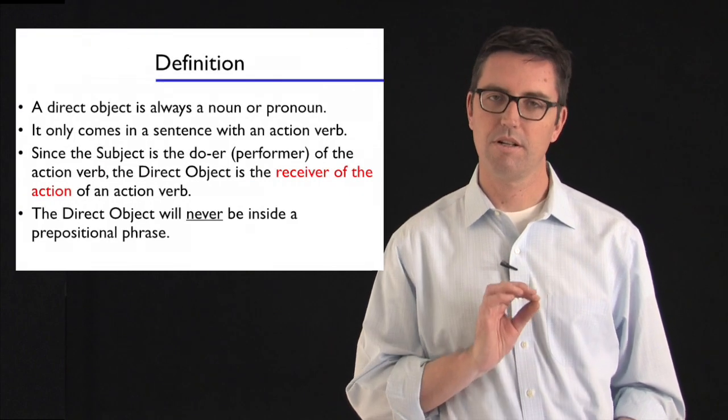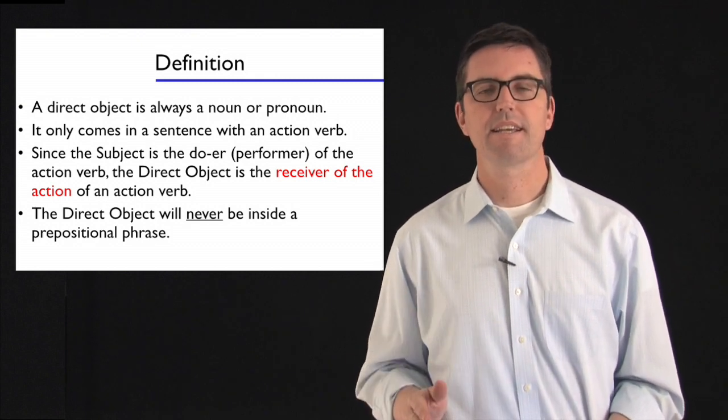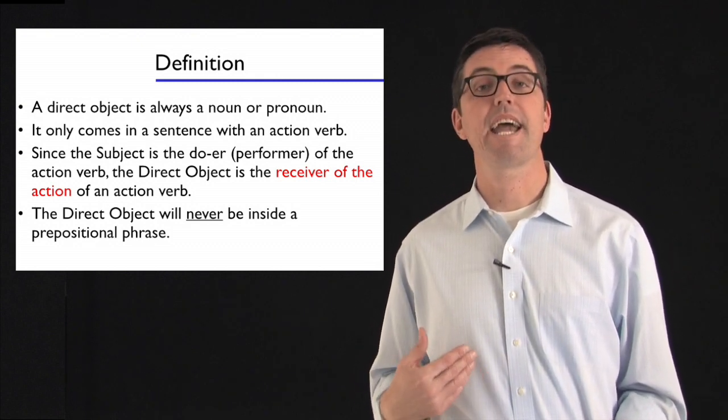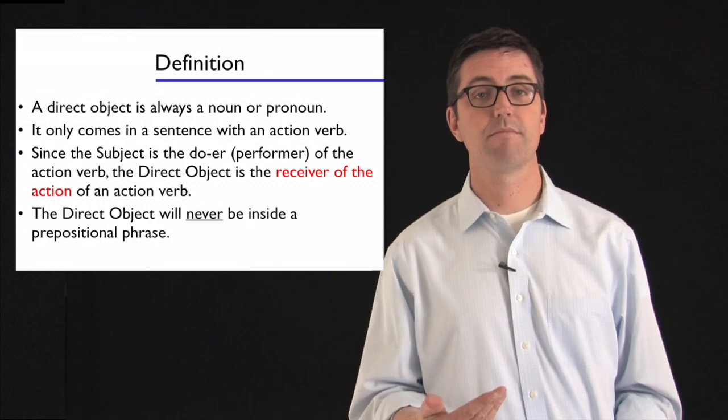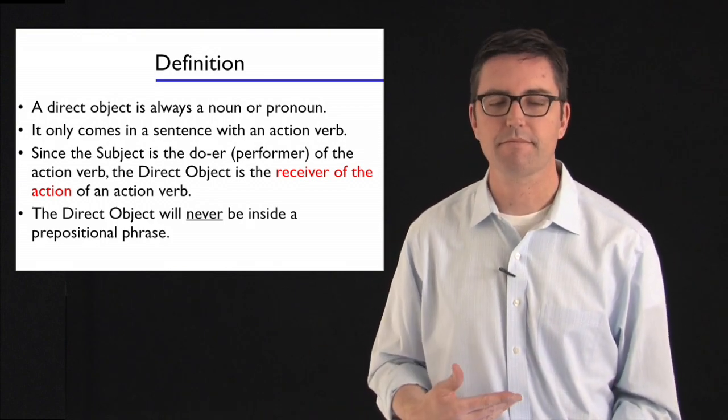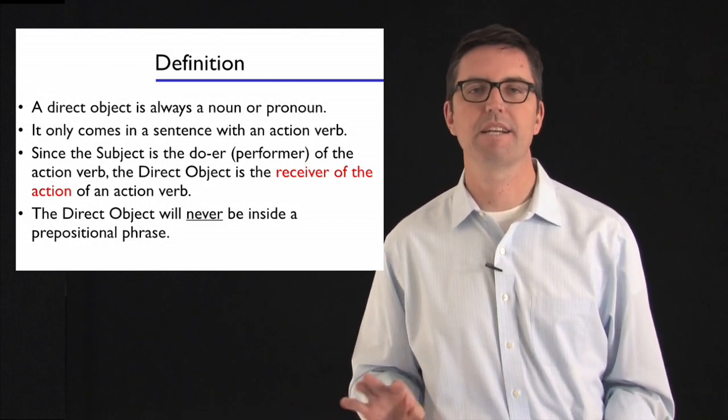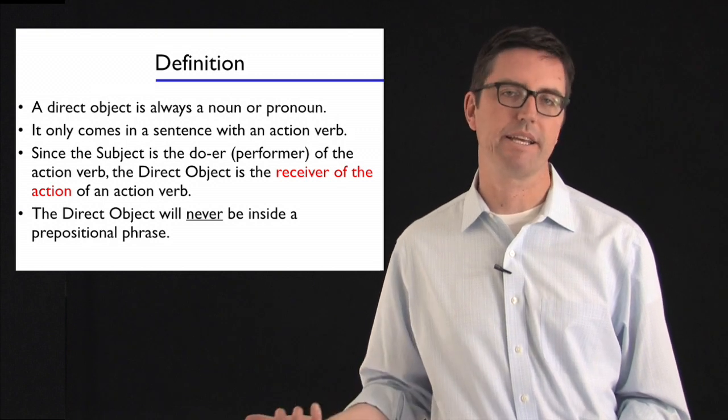A couple truths that you should know about direct objects. First of all, direct objects are always nouns or pronouns. They have to be. Secondly, they have to come after an action verb, or they have to come with an action verb. They almost always come after. They can't come with linking verbs. If there's a noun after a linking verb, that is something totally different. It's a predicate noun.